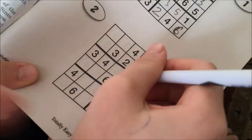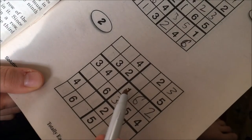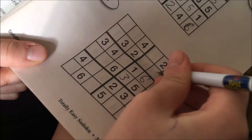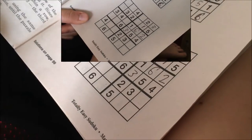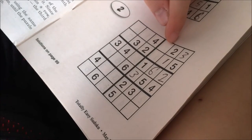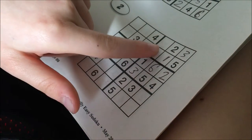One can't go anywhere here because there's already a one right there. So one has to go right here. Four can't go here, so it has to go right here.